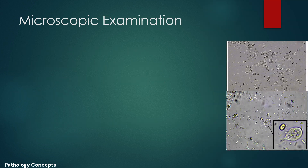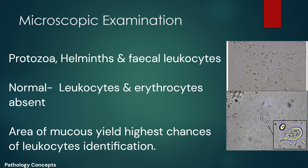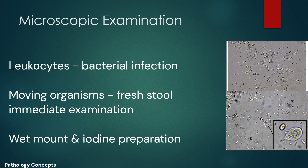Now let's learn about microscopic examination. Microscopic examination is a diagnostic tool for identifying protozoa, helminths, and fecal leukocytes. Erythrocytes and leukocytes are not observed in normal stools. To see leukocytes, examination should be performed on stool samples from areas with mucus. Leukocytes are generally observed in bacterial infections and are not observed in diarrhea caused by viruses and parasites. For moving organisms, fresh stool can be examined immediately.